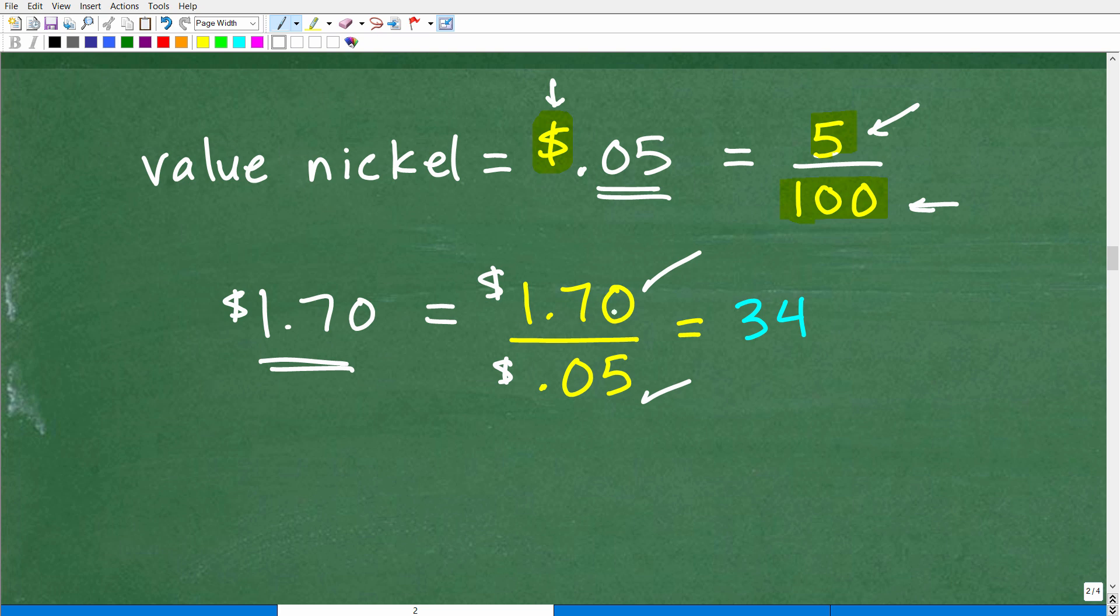So $1.70 divided by 0.05 of a dollar, which is 5 one-hundredths of a dollar, which is of course, 5 cents. 1.70 divided by 0.05 on your calculator. You'll see, you'll get this lovely answer here, 34, which of course is 34 nickels in $1.70.